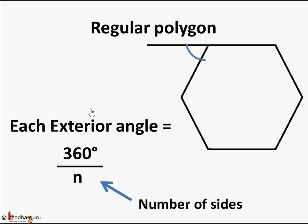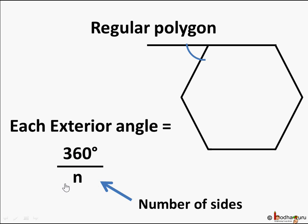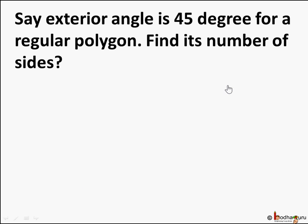Now let's generalize it for a regular polygon with n number of sides. Each exterior angle will be 360 degrees divided by n. This is because the sum of all exterior angles of any polygon is 360 degrees, and in a regular polygon all sides are the same length and all angles are equal, so each exterior angle equals 360 degrees divided by n.